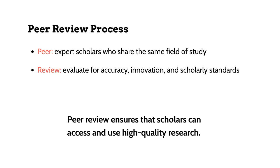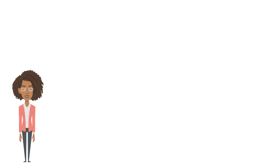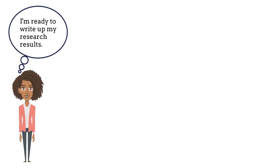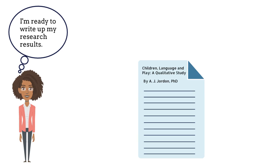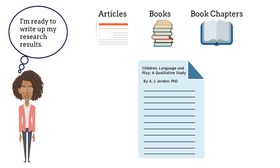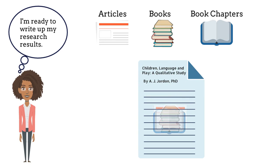Let's walk through the peer review process. Professor Alexis Jordan is a psychology scholar. She has conducted research on children's language acquisition through play. Now it's time to write a paper about the results. In her paper, Professor Jordan writes about her research project, and also finds and cites relevant information from research other scholars have done on the subject. She does this to show how she has built her research on that of other scholars.